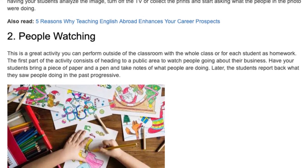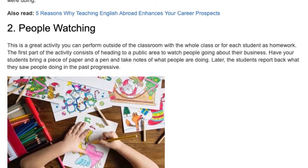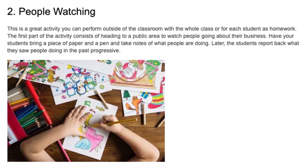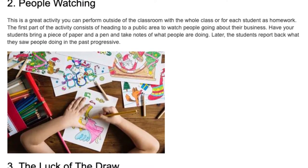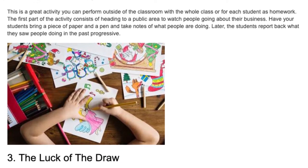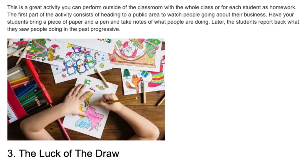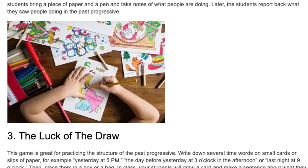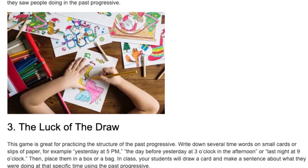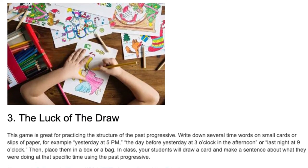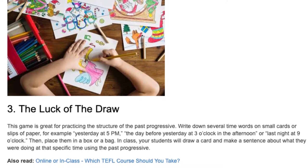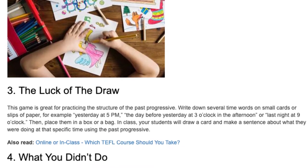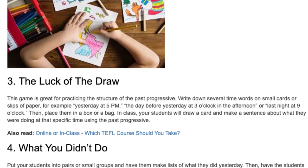3. The Luck of the Draw. This game is great for practicing the structure of the past progressive. Write down several time words on small cards or slips of paper — for example, 'yesterday at 5pm,' 'the day before yesterday at 3 o'clock,' or 'last night at 9 o'clock' — then place them in a box or bag. In class, students draw a card and make a sentence about what they were doing at that specific time using the past progressive.